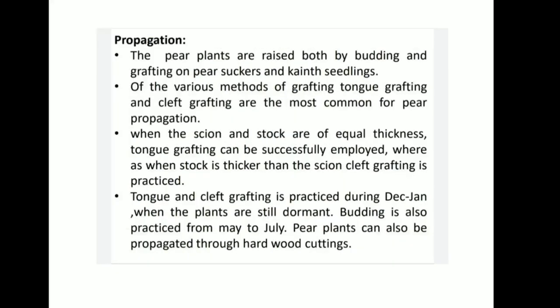Now Propagation. Pear plants are raised both by budding and grafting on pear suckers and quince seedlings. Of the various methods of grafting, tongue grafting and cleft grafting are the most common for pear propagation. When the scion and rootstock are of equal thickness, tongue grafting can be successfully employed, whereas when the rootstock is thicker than the scion, cleft grafting is practiced. Tongue and cleft grafting is practiced during December to January when plants are still dormant. Budding is also practiced from May to July. Pear plants can also be propagated through hardwood cuttings.